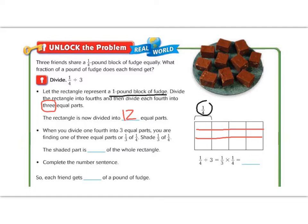When you divide one-fourth into three equal parts, you are finding one-third of one-fourth. So let's shade one-third of one-fourth. So if I just look at the one-fourth pound of fudge I have, I'm going to shade one-third of my one-fourth. So that means I'm going to shade one of the three pieces, which, if we look at the whole rectangle, means that I've shaded one out of twelve pieces.